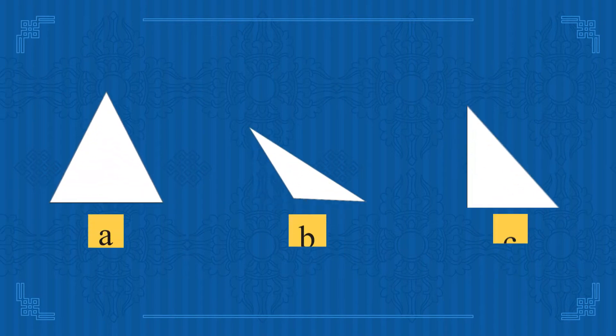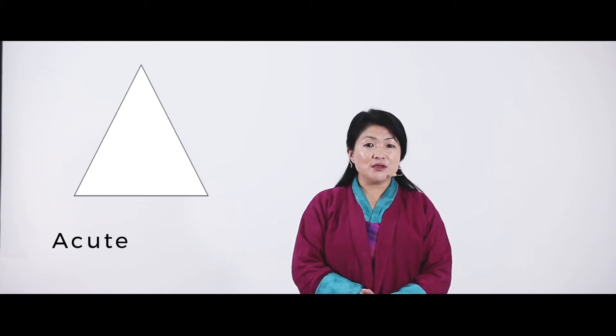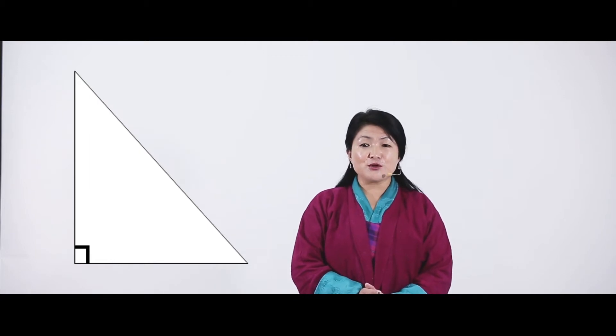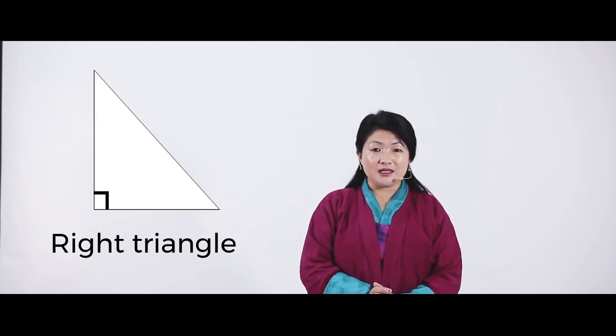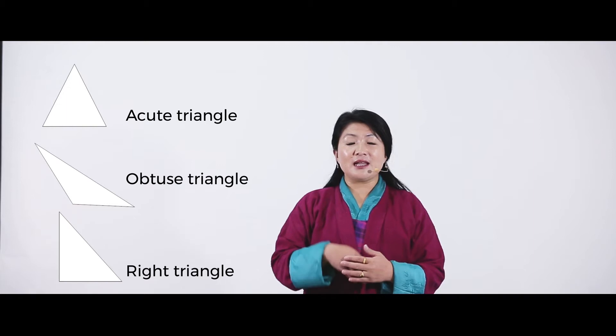Here I have three triangles: Triangle A, Triangle B, and Triangle C. Look at the triangles and classify them by their angles. Triangle A is an Acute Triangle. Triangle B — look at the biggest angle — that is an Obtuse Triangle. And Triangle C, where each angle is 90 degrees, is a Right Triangle.